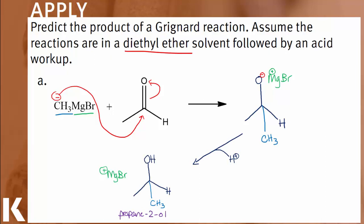Since this is a nucleophilic addition reaction, we should always end up with more carbon groups in the final product than in our initial reactants. The one carbon from the Grignard reagent plus the two carbons in our reactant gives us three carbons total in our alcohol product.